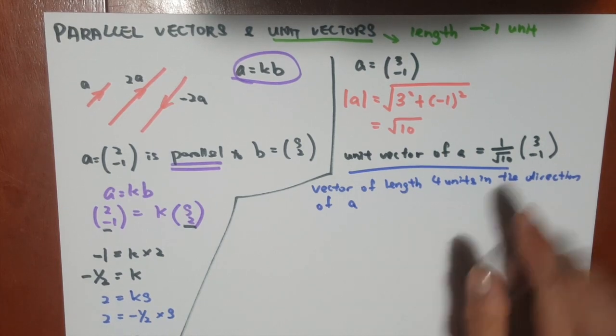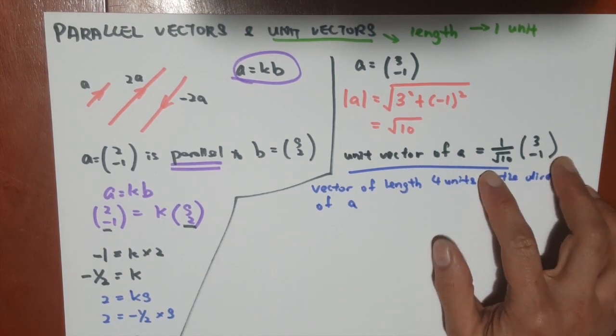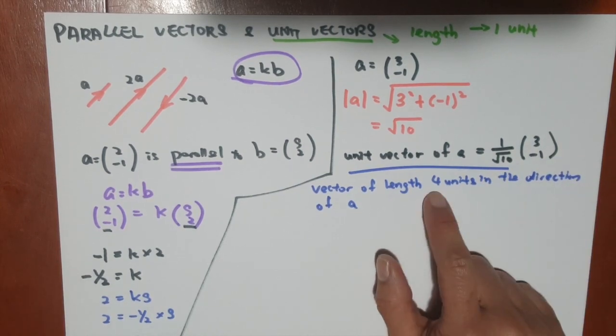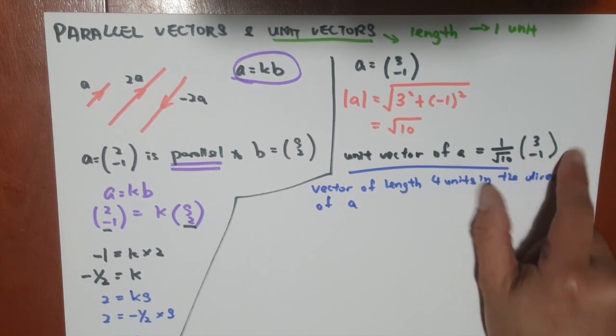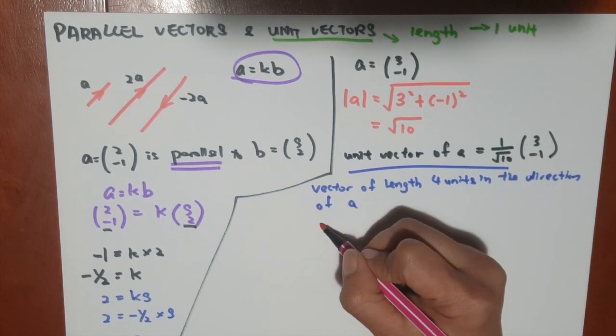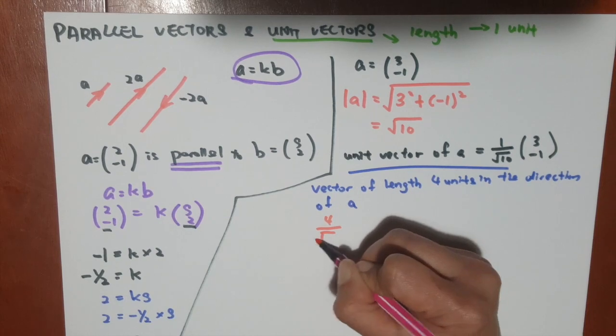It's really easy, because we already have the unit vector, which is of length 1. In order to get it in 4 units, we just have to take the unit vector times by 4, so we will get this as the answer.